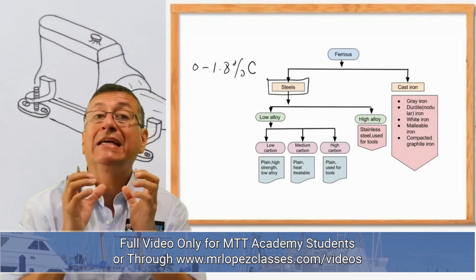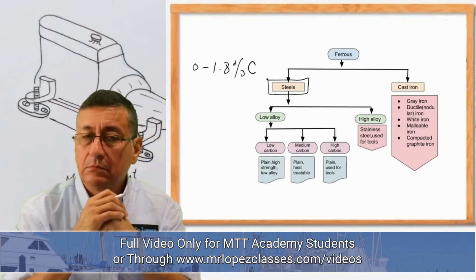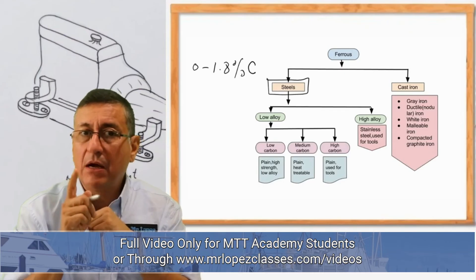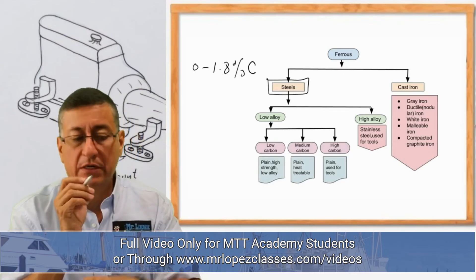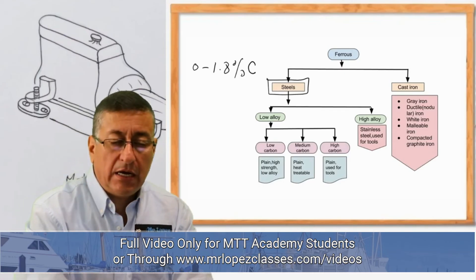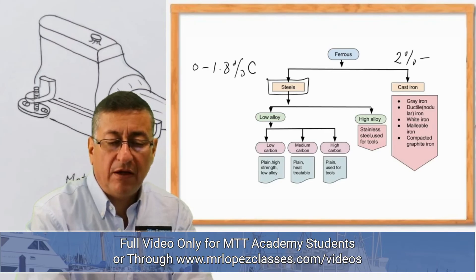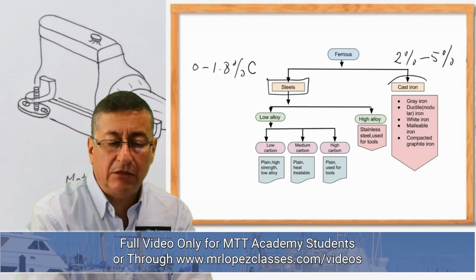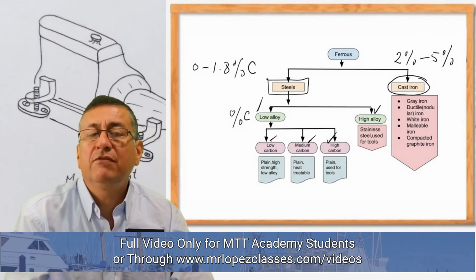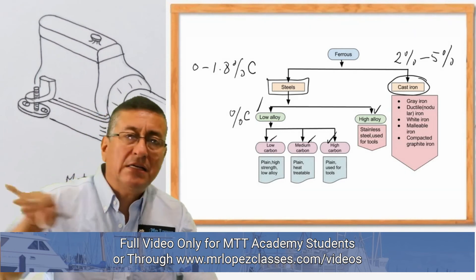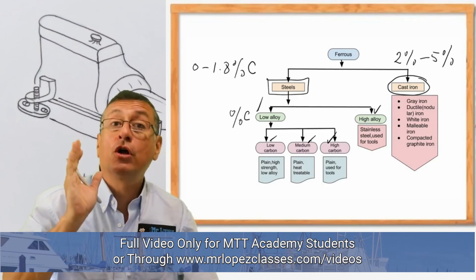If the amount of carbon is between 2% and 5%, the alloy is considered cast iron. Don't forget those numbers: the carbon content determines whether the alloy is cast iron or steel.